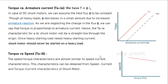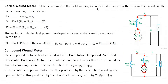Torque versus armature current characteristics of the shunt motor. We know that torque T is directly proportional to φ·Ia. In the case of the shunt motor, flux is assumed constant — the shunt motor is always called a constant flux motor because the shunt field current remains almost constant.